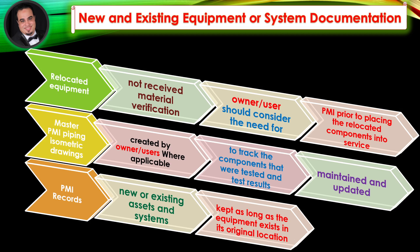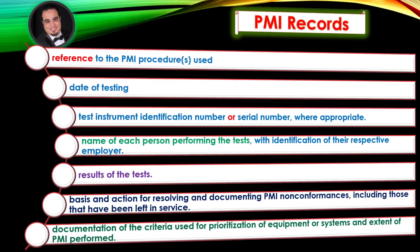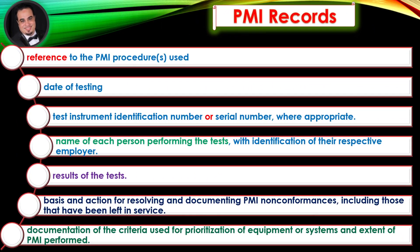PMI records for new or existing assets and systems should be kept as long as the equipment exists in its original location. Typical PMI records should contain the following: reference to the PMI procedures used, date of testing, test instrument identification number or serial number where appropriate, and the name of each person performing the tests with identification of their respective employer.